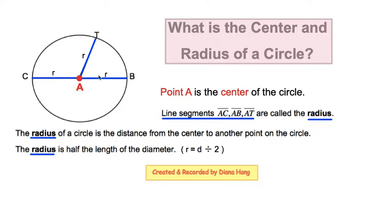Now, points C and point B and point T, those three points are on the circle.